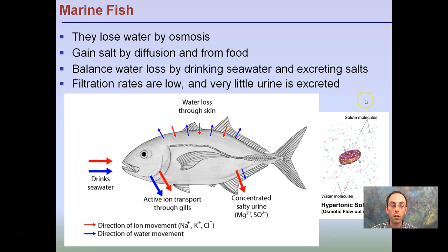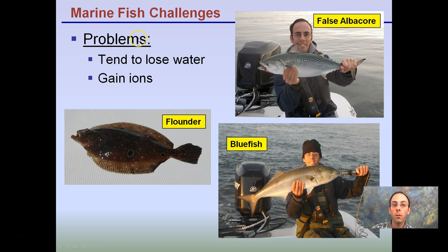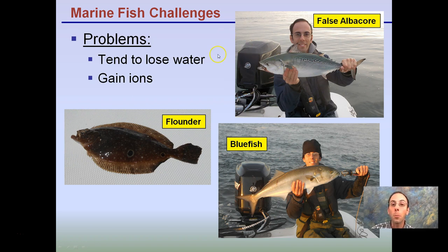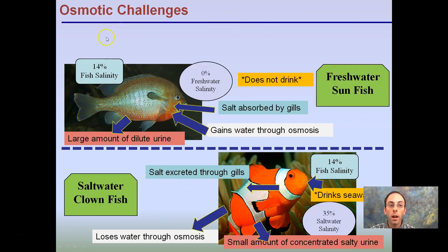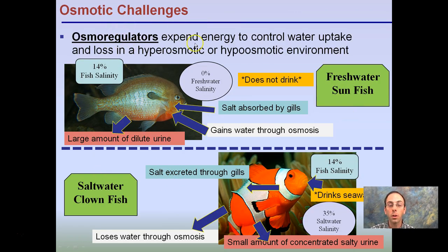Examples of marine fish — flounder, bluefish, and false albacore — all live in marine or saltwater environments and tend to lose water and gain ions. These have very different challenges than freshwater fish, and all of these fish were caught in Long Island Sound. Osmoregulators are expending energy to uptake water. This makes a great comparison of the stresses of freshwater fish and saltwater fish — look at the arrows showing what's moving in and out of the fish.